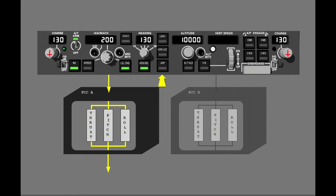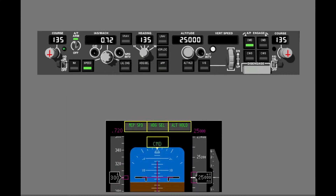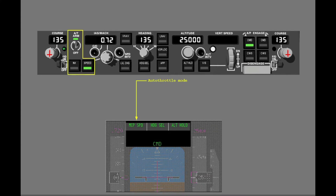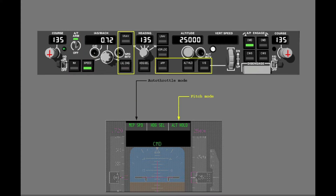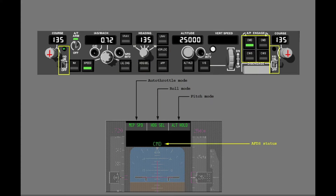Now push the Approach switch. The FCCs calculate thrust, pitch, and roll commands for the Approach mode. When you select the Approach mode, the other modes are no longer active. The Flight Mode Annunciation, or FMA, shows Autoflight System status in four fields above the Attitude indicators. The fields show data about the Autothrottle, the Pitch Mode, the Roll Mode, and the AFDS status.